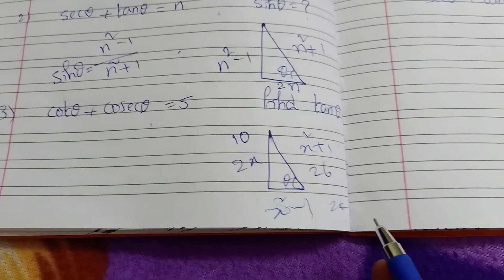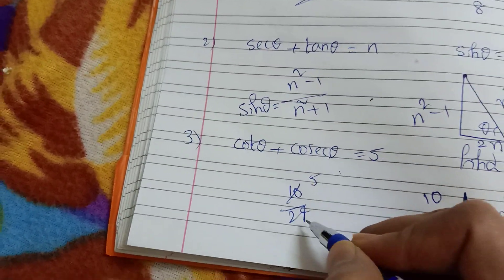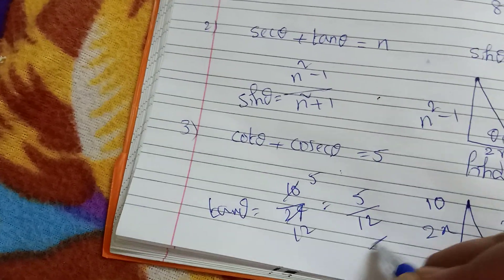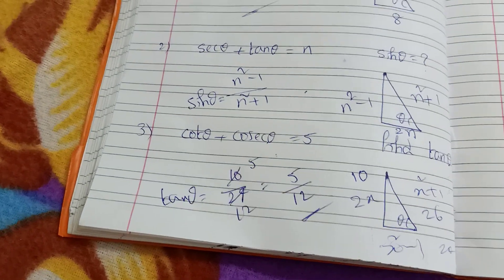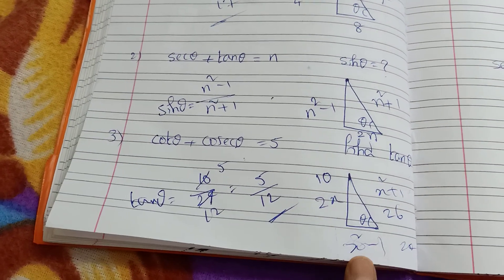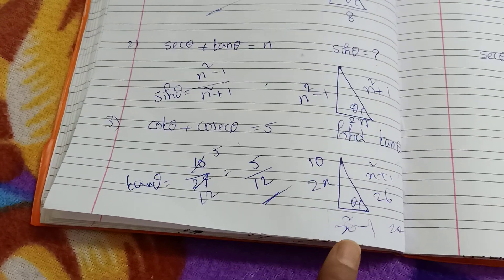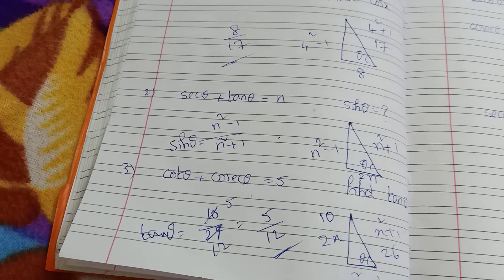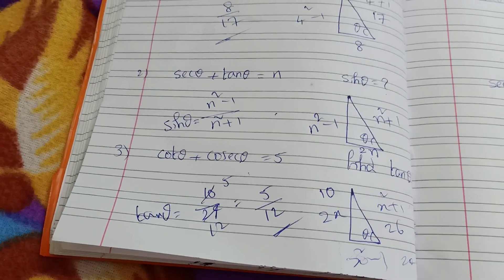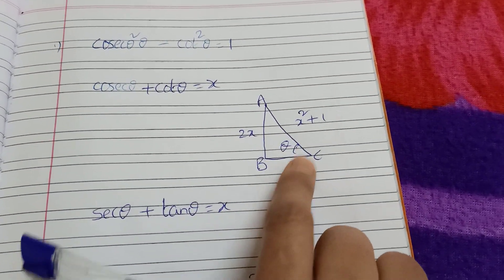The opposite side is 10 and the adjacent side is 24, so tan θ = 10 by 24 — cancel by 2 — that gives 5 by 12. So tan θ = 5/12. Now, generalizing: if n is there, then 2n is opposite, n² + 1 is hypotenuse, n² minus 1 is adjacent. So sin θ = 2n/(n² + 1), cos θ = (n² minus 1)/(n² + 1), and tan θ = 2n/(n² minus 1).